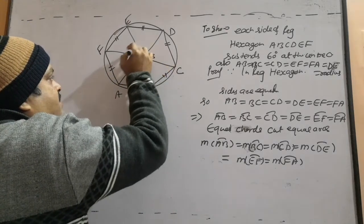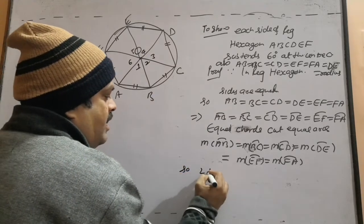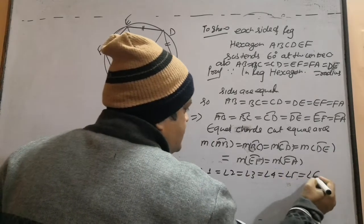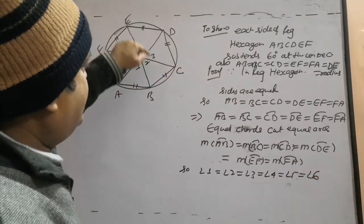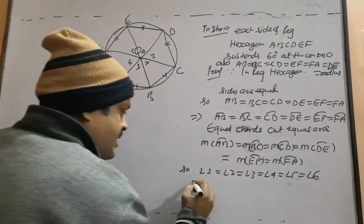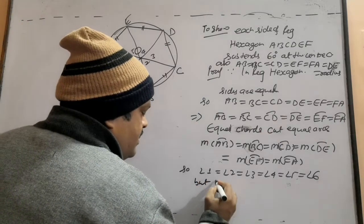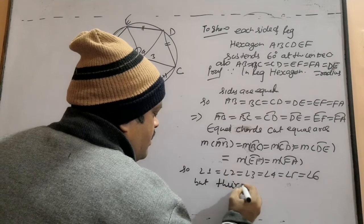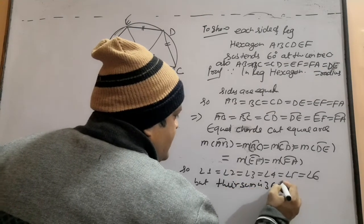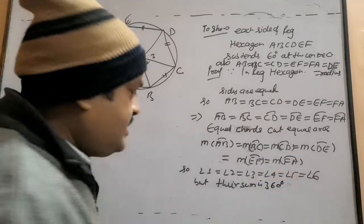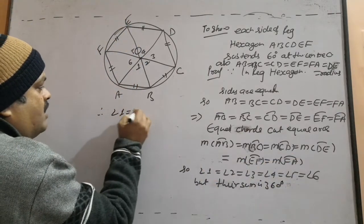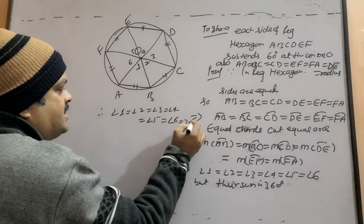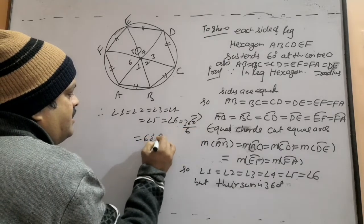Marking angles 1, 2, 3, 4, 5, 6: angle 1 equals angle 2 equals angle 3 equals angle 4 equals angle 5 equals angle 6. But their sum is 360 degrees. Therefore each angle equals 360 divided by 6 equals 60 degrees. Proved.